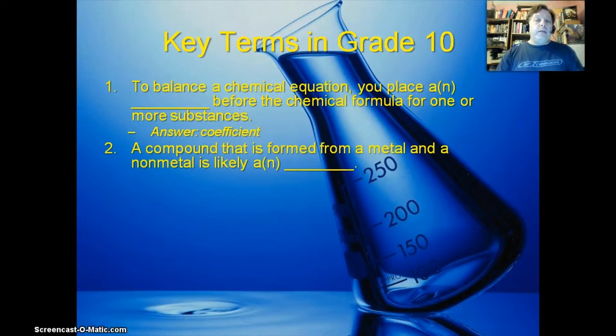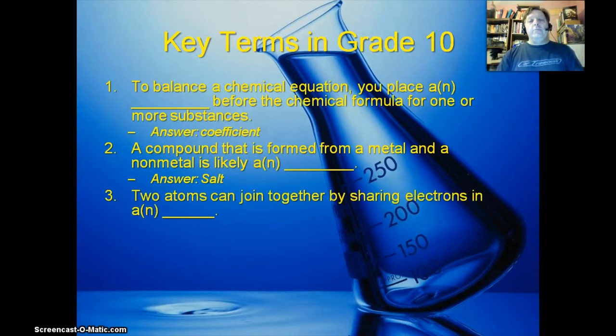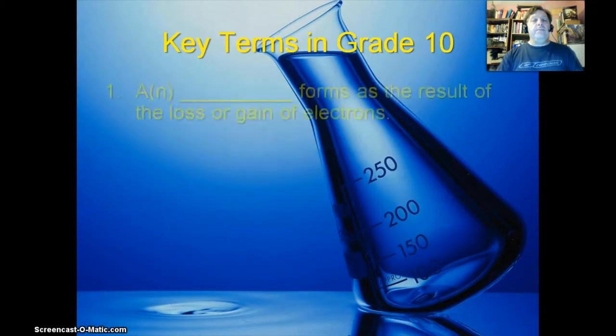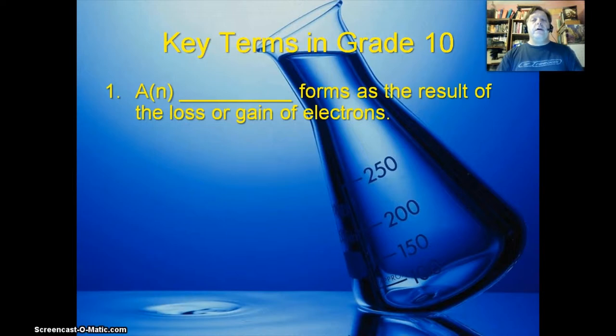A compound that is formed from a metal and a nonmetal is likely a salt. Two atoms can join together by sharing electrons in a chemical bond. The substances that are formed during a chemical reaction are called the products.